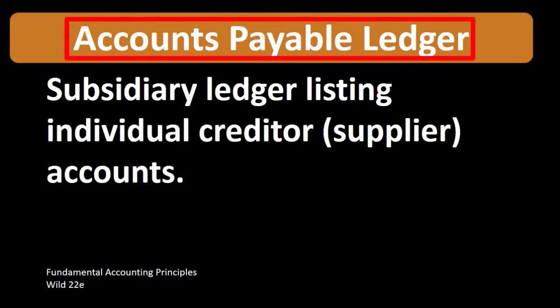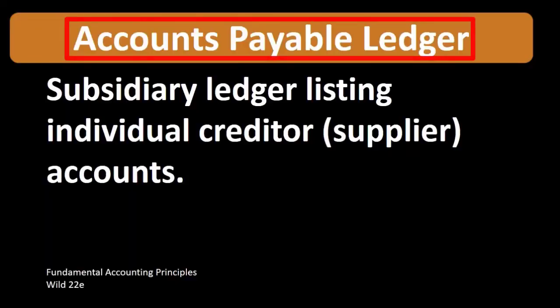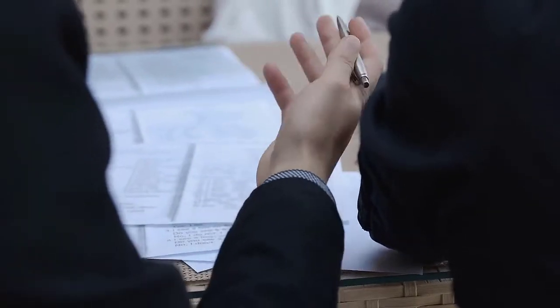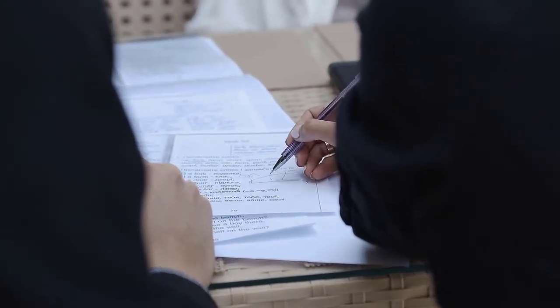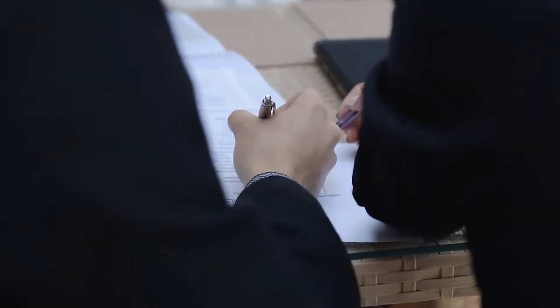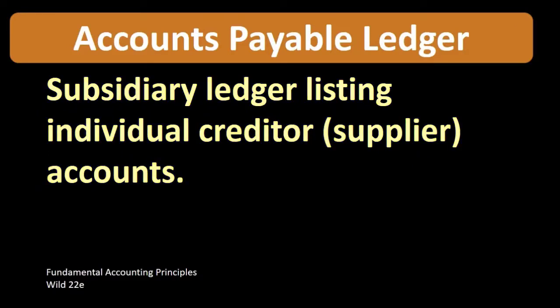That account represents what is owed to third-party vendors. A common question from the boss might be: how much money do we owe to our vendors? We could look at the accounts payable and say this is how much we owe. The next question usually will be: who do we owe, when do we need to pay them, and who do we need to pay first? In order to answer that, we cannot go to the normal source we use to back up the information, which is the general ledger.